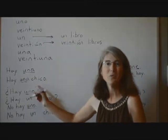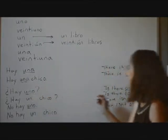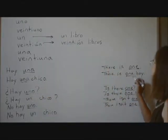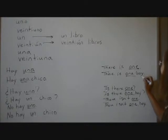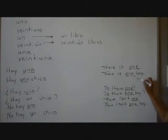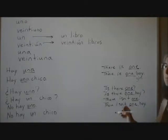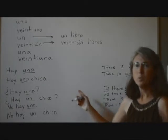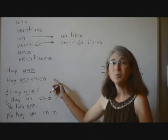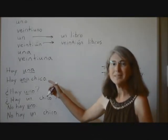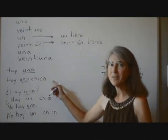Any time the number one stands by itself without a noun following, then it's going to be in this form — 'uno' — if you're talking about something masculine or something that we don't know the gender of.